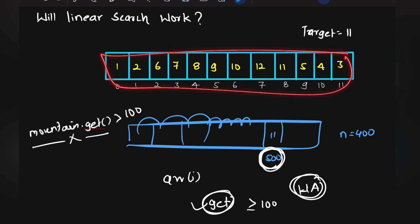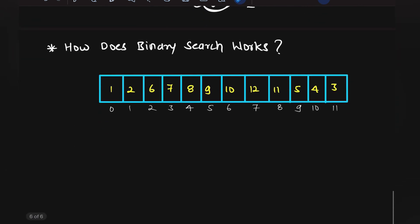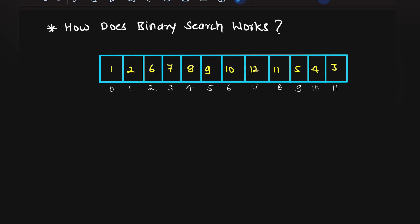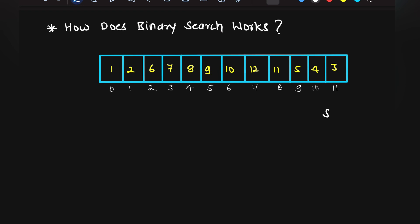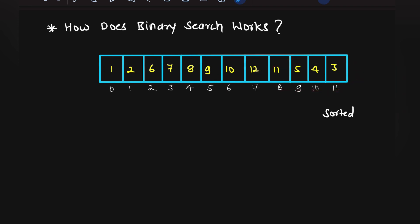If linear search doesn't work and we need to find a target in an array, binary search comes to mind. However, binary search requires the array to be sorted. Looking at the mountain array, it is not completely sorted — it is partially sorted: increasing up to the peak, then decreasing. So how do we apply binary search here?